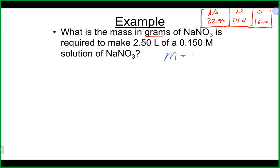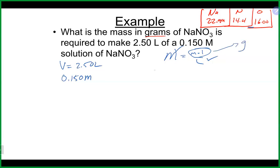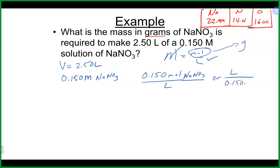We're dealing with molarity, which is moles per liter. The volume is given as 2.5 liters and the molarity is 0.15 M. The only thing we're missing is moles, and then we can use the molar mass to go to grams. We can take the molarity of sodium nitrate and rewrite it as 0.15 moles per liter of sodium nitrate.